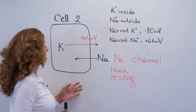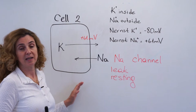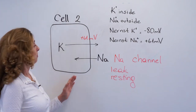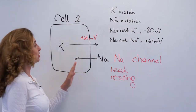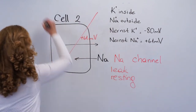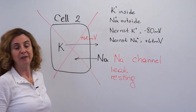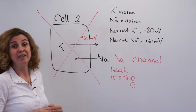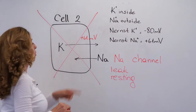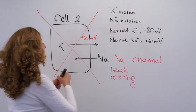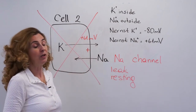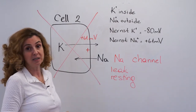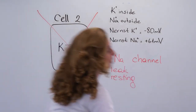Does a cell like this exist? Cell number one can exist in the body — a cell with minus 80 millivolts is present in our body. But a cell with a resting membrane potential of plus 61 millivolts is not present in the body. We have said previously that all cells in our body have a resting membrane potential with a negativity on the inner side of the membrane. So with plus 61 millivolts — a positivity on the inner side — we don't have any cell with a resting membrane potential like this. Cell one exists in the body but cell two does not.